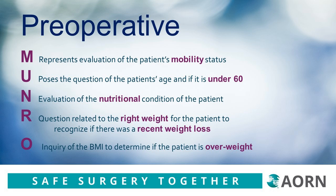The remaining preoperative risk factors are listed and represented in the word Monroe. M represents evaluation of the patient's mobility status. U poses the question of the patient's age and whether it's under 60. N is for evaluation of the nutritional condition of the patient. R represents the question related to right weight for the patient and recognizing if there was a recent weight loss. O represents inquiry of the BMI to determine if the patient is overweight.